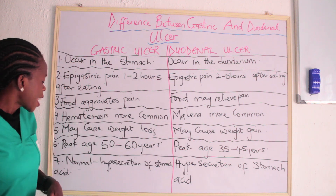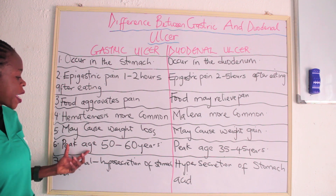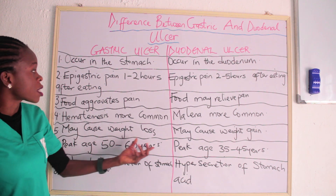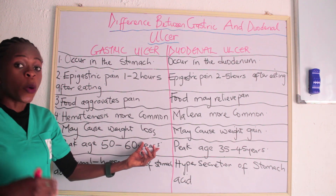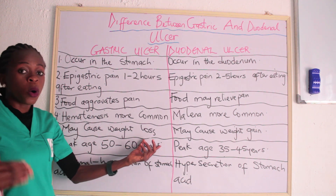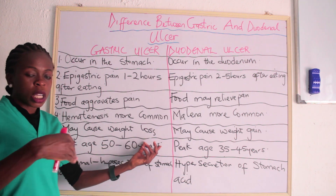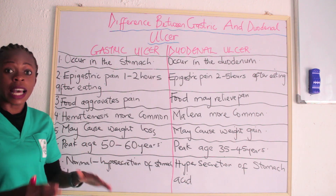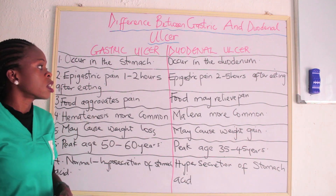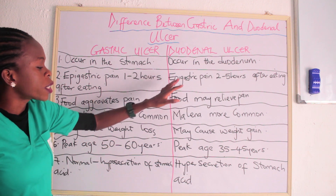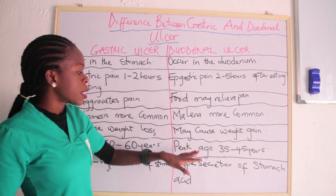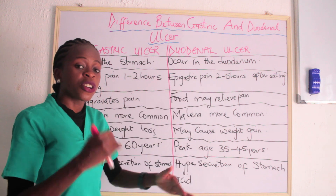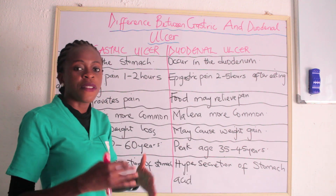The next difference is the peak age of onset. People who develop gastric ulcer are usually within the age of 50 to 60 years — that is the peak age. While for duodenal ulcer, the peak age is 35 to 45 years.